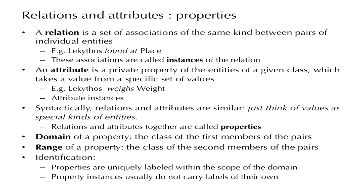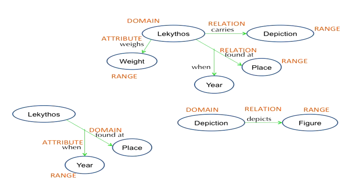We will use the term 'property' to refer collectively to relations and attributes, because we will deal with them in the same way. For properties, there are two important sets: the domain of the property is the class of the first members of the pairs belonging to that property, and the range of the property is the class of the second members. So Lekithos is the domain of the property 'found at', place is the range. Lekithos is the domain of the attribute 'weighs' and weight is the range.